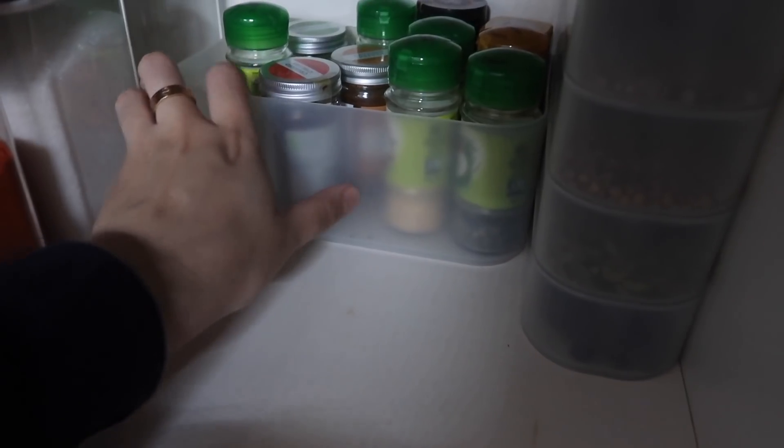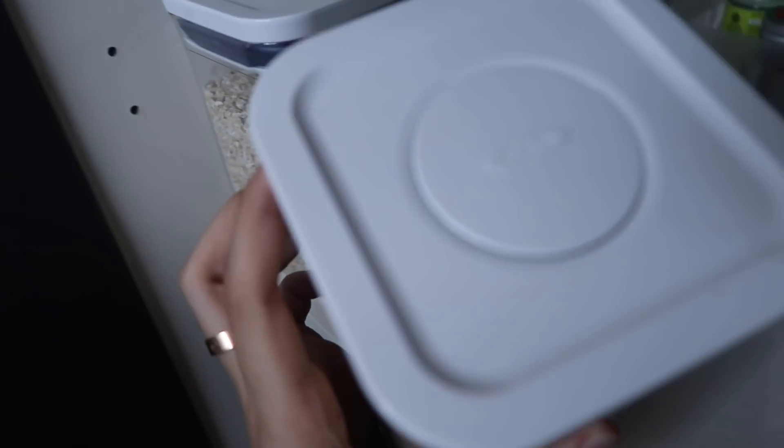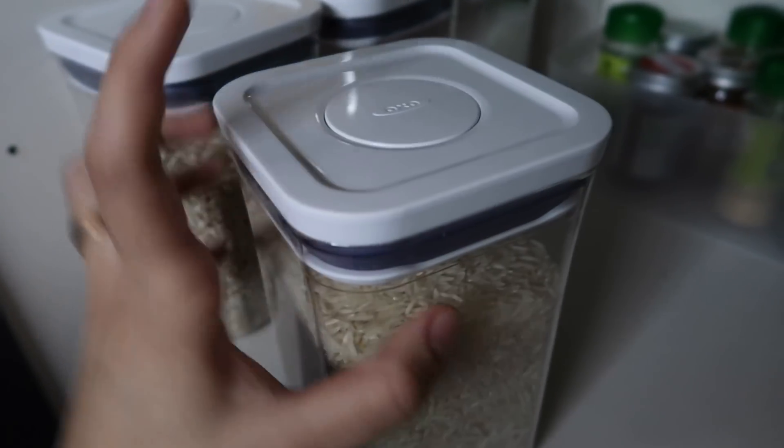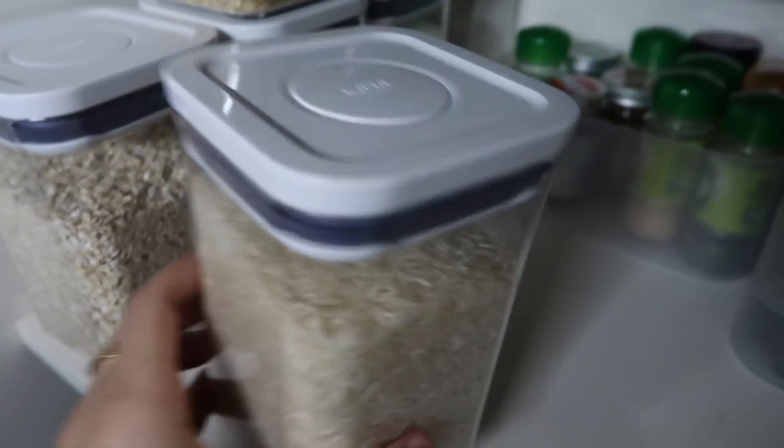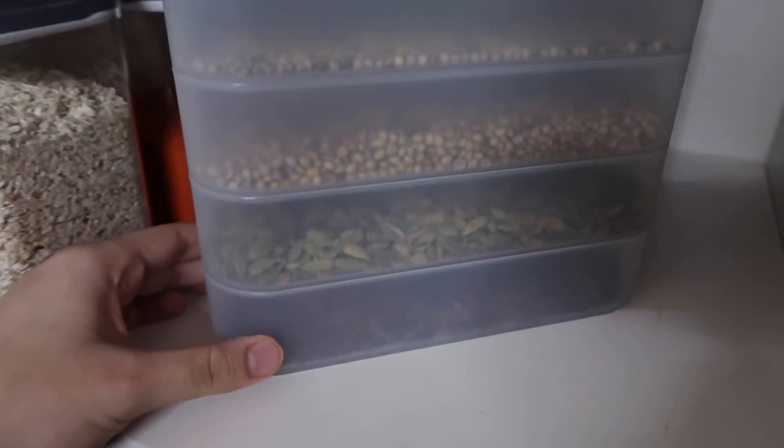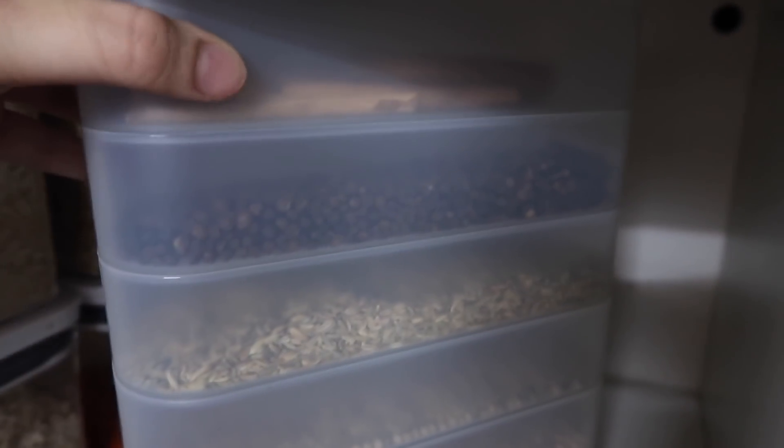Then in here I got some spices so everything is in one container. These kind of containers are all from Muji but you guys can look at Daiso as well, they have pretty similar ones. This one is, I don't remember from where. Oh they're OXO, the brand is OXO. So it just pops up and yeah, that's good.